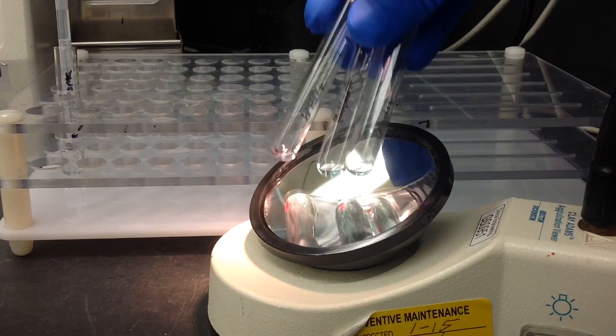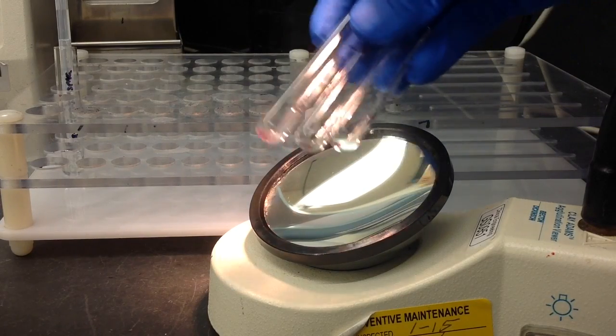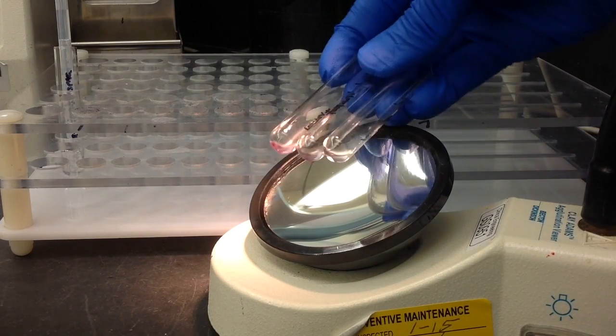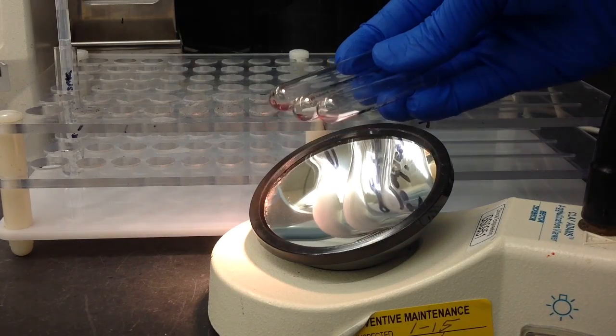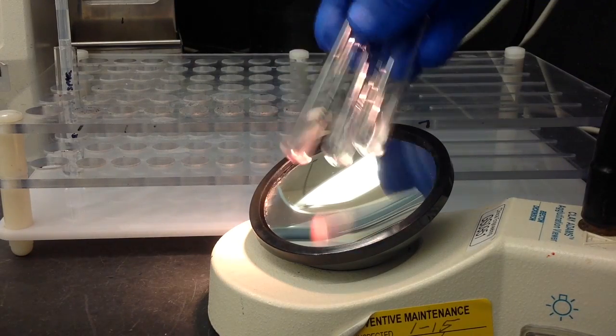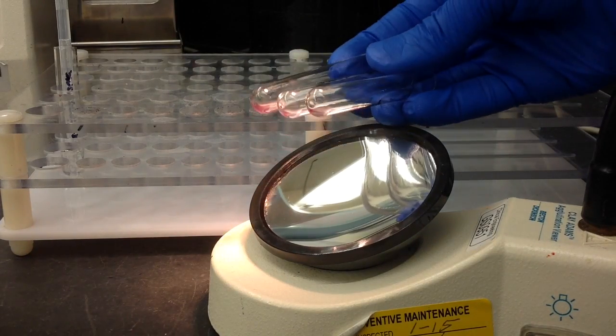...your agglutination viewer so that you can read the tubes. So resuspend your cell buttons. Since I'm using physiological saline as my patient plasma, I of course am getting zero agglutination.